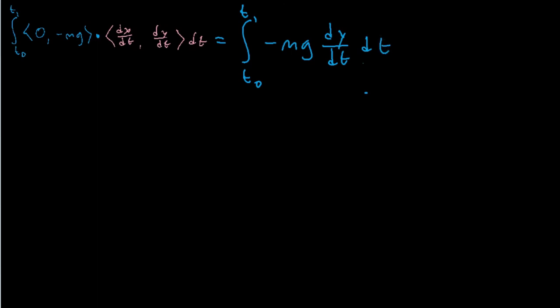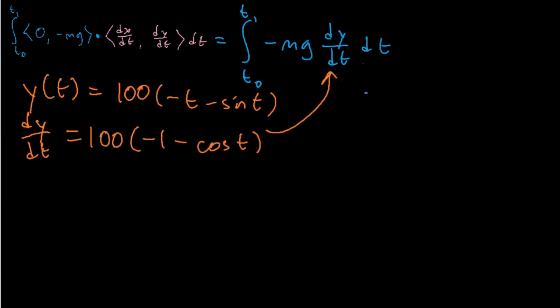What is dy dt? We're given that y of t is equal to 100 minus t minus sine t. So, dy dt is just the derivative of that, 100 times negative 1 minus cosine t. And so, we can plug this here and substitute.